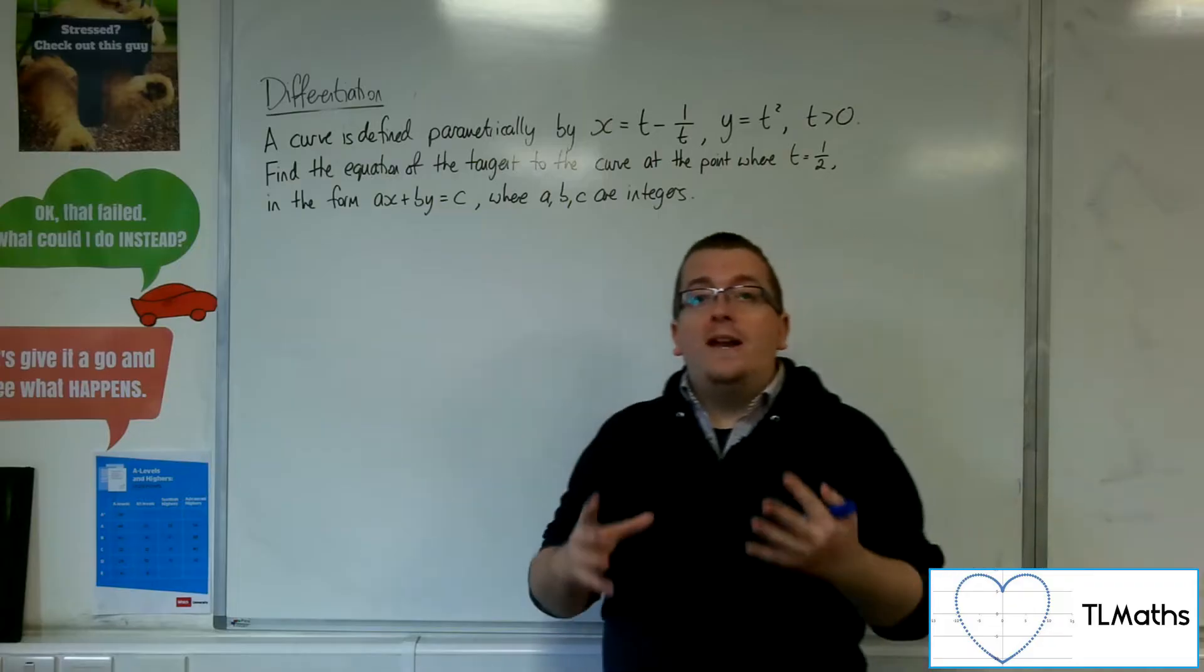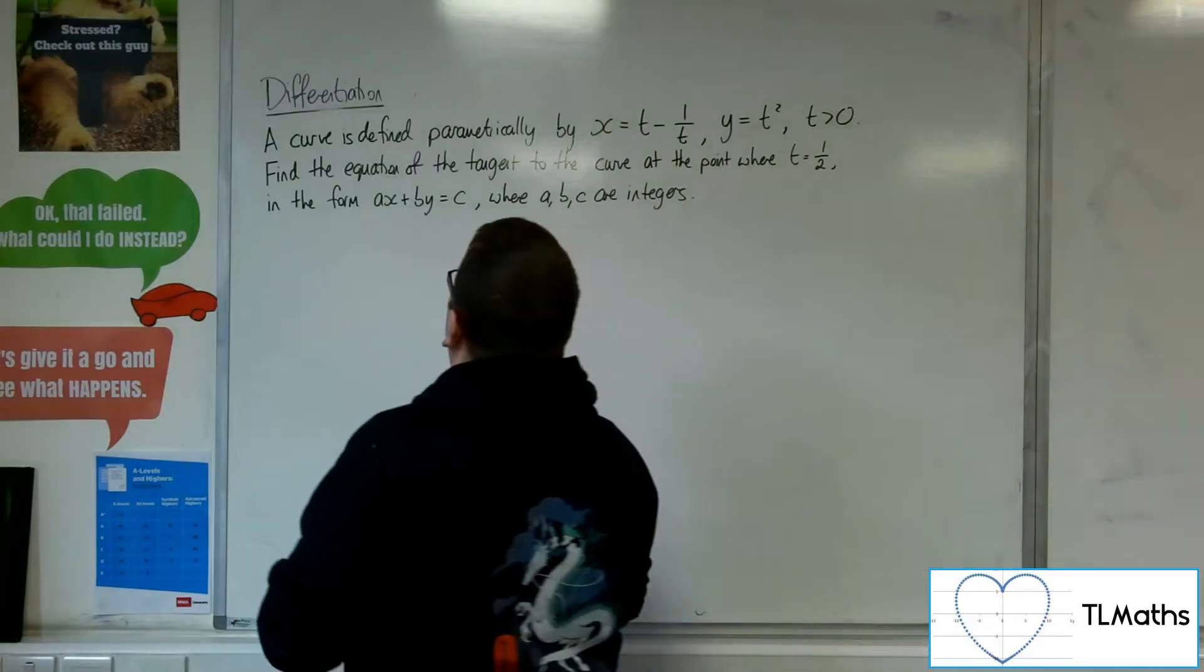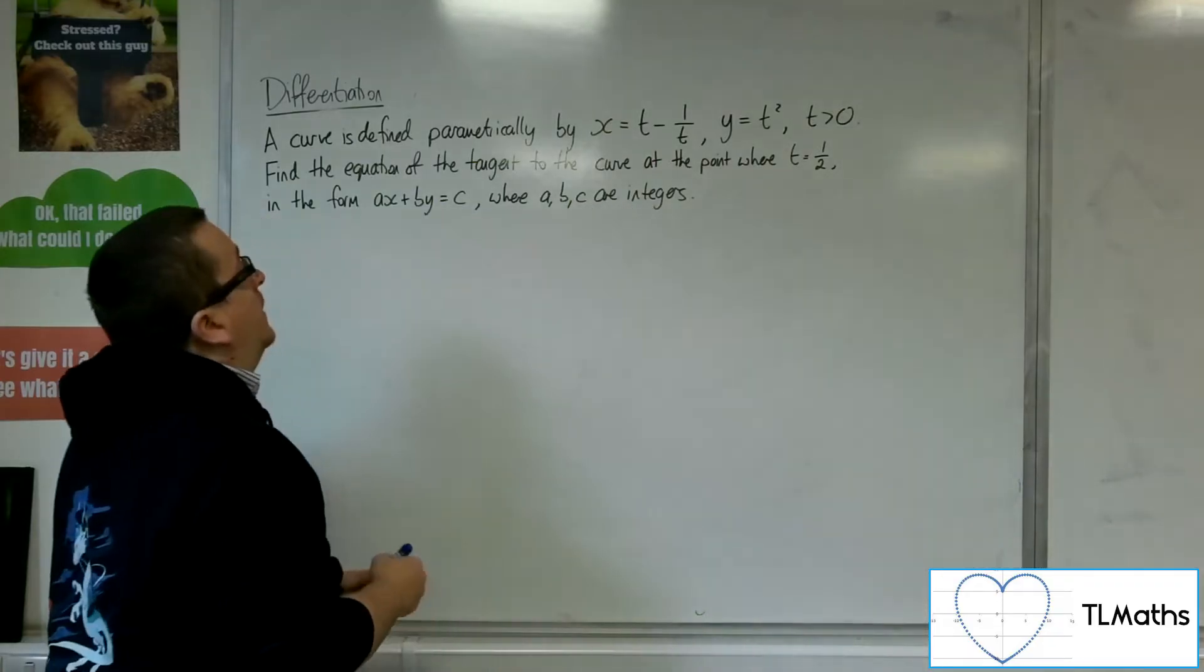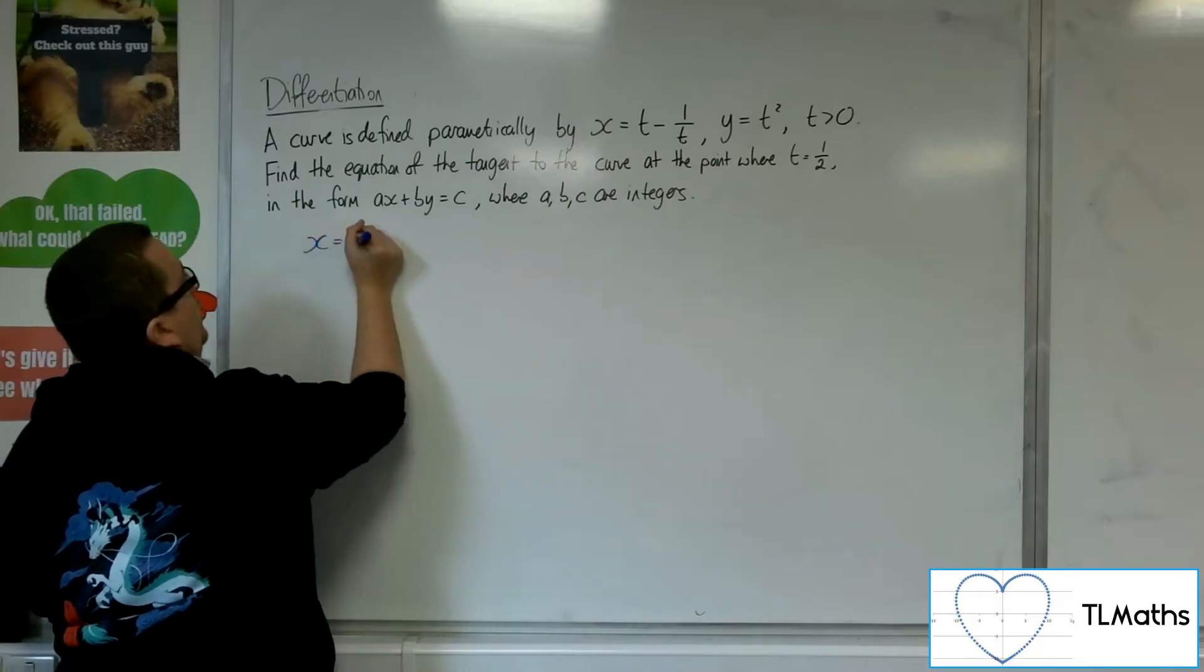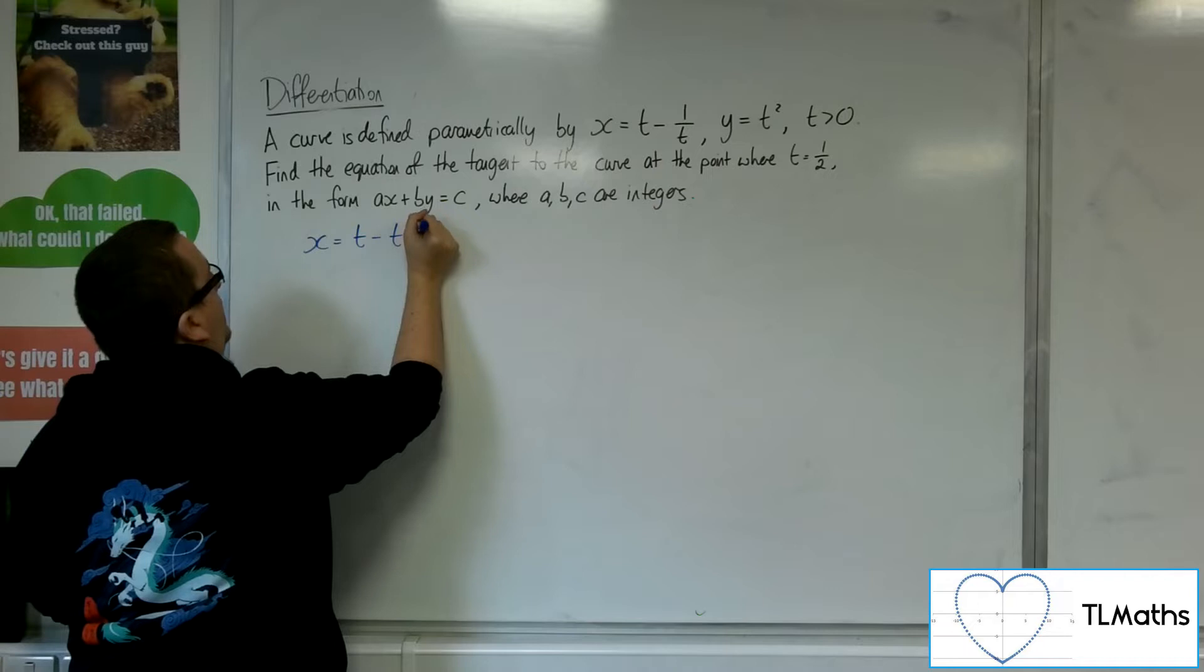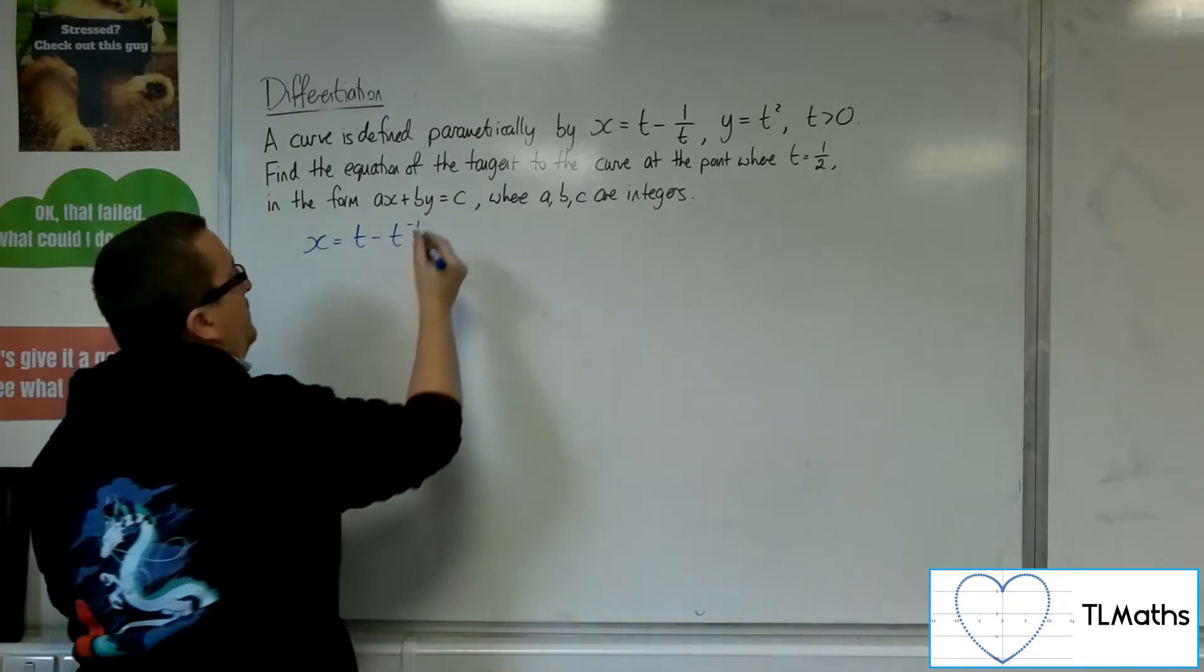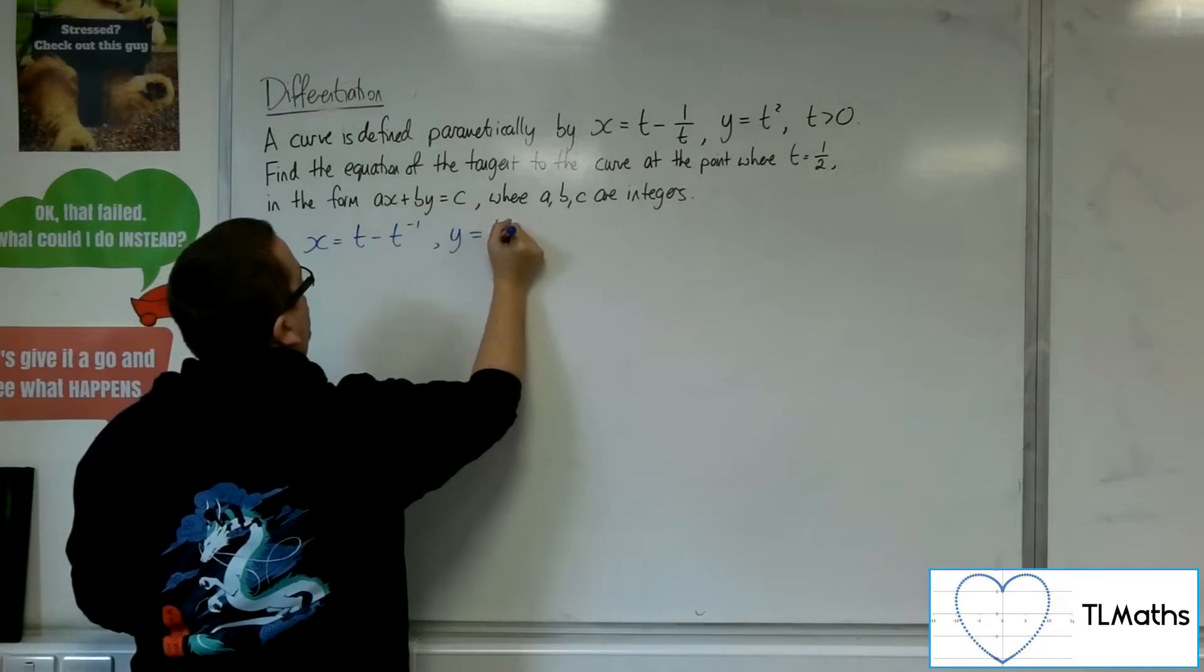Okay, so I need to find the gradient function in order to work through this problem. So, x is equal to t minus t to the minus 1. I'm going to rewrite it like that first. And y equals t squared.